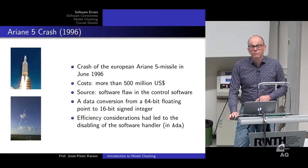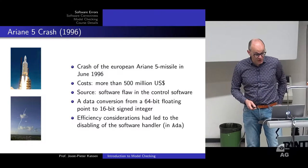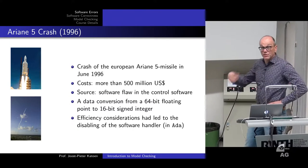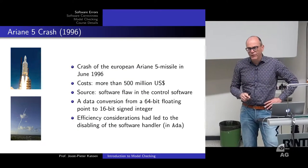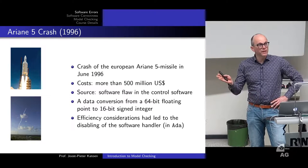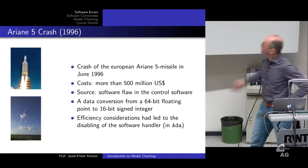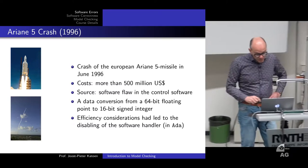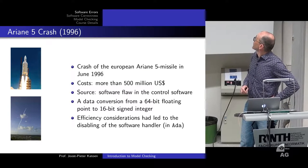The example most people use when talking about software mistakes is the Ariane 5 crash in 1996. This was a European Ariane 5 missile, supported by the European Space Agency, launched in French Guiana in South America. It crashed within one or two minutes after launch. Here you see the launching and here it crashes. It cost more than 500 million US dollars.